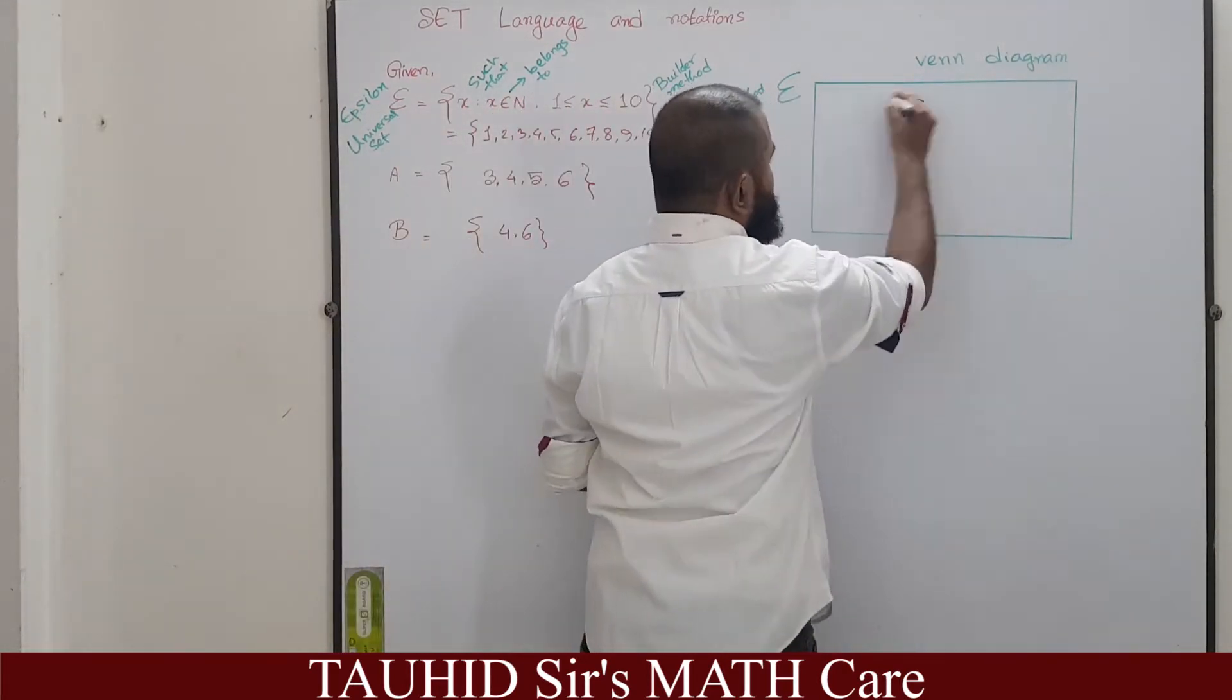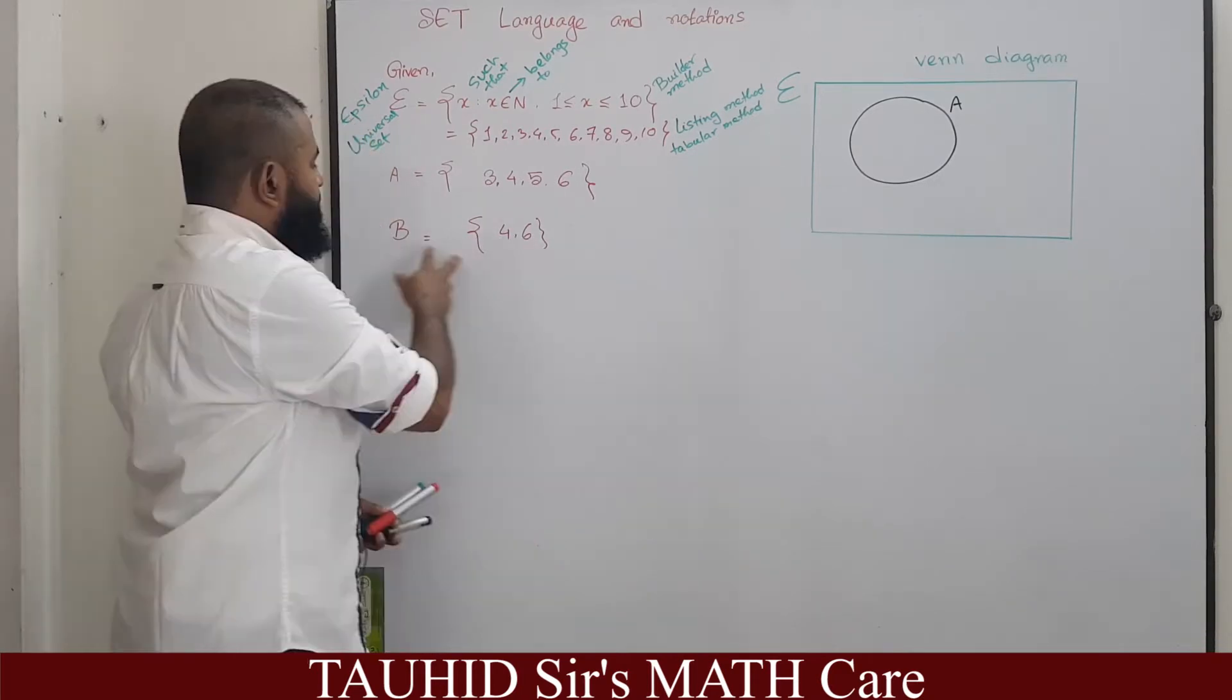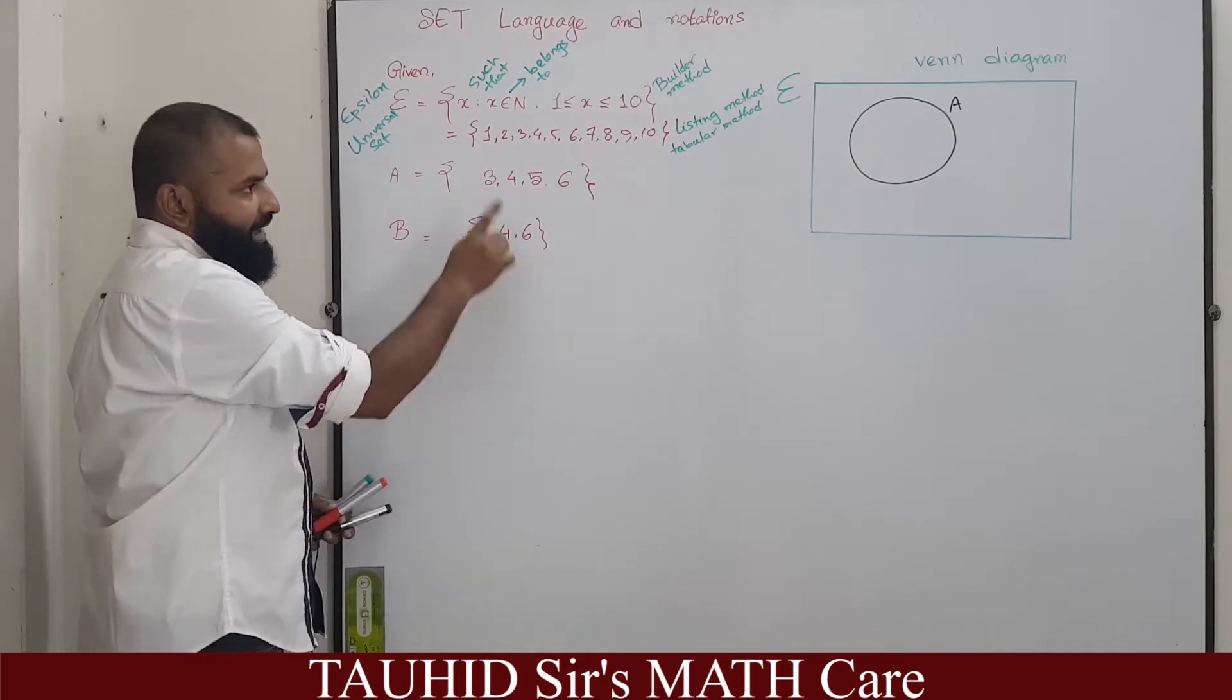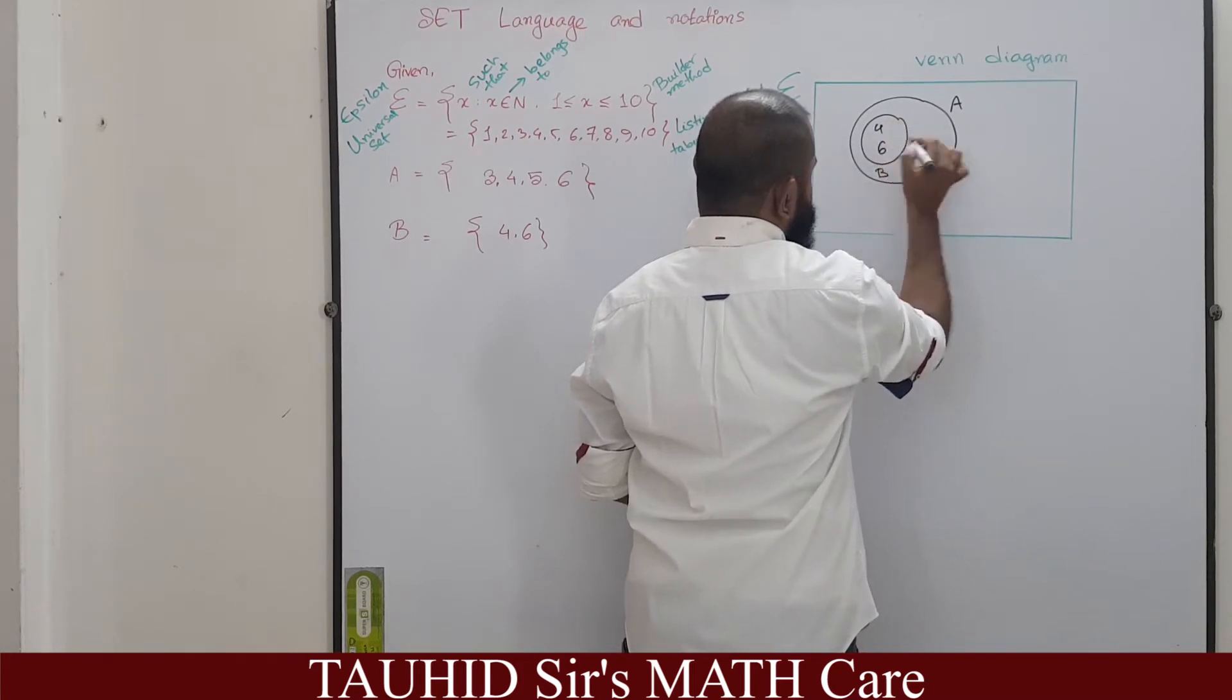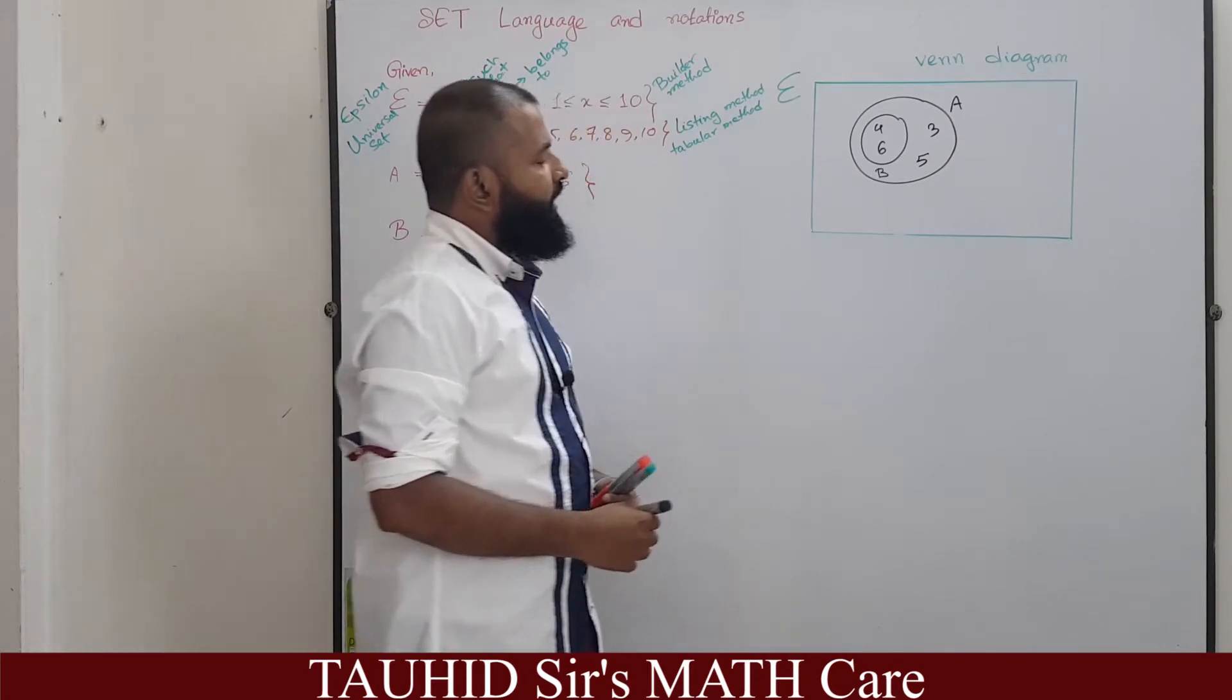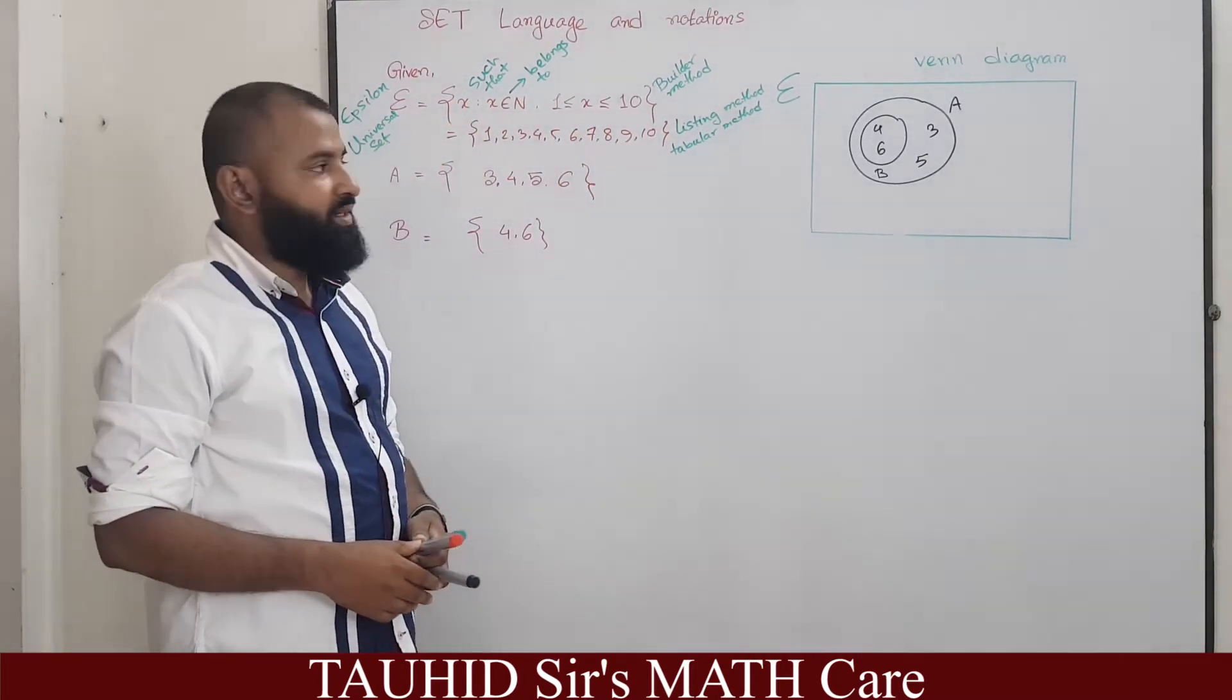If we draw this set on the Venn diagram it will be drawn as, and another set here is B, 4, 6. B contains 4 and 6, A also contains 4 and 6, so B lies inside A. This is B, it contains 4 and 6. A contains 3, 4, 5, 6 and the rest are contained outside the set A.